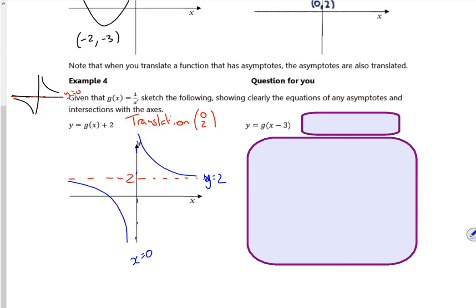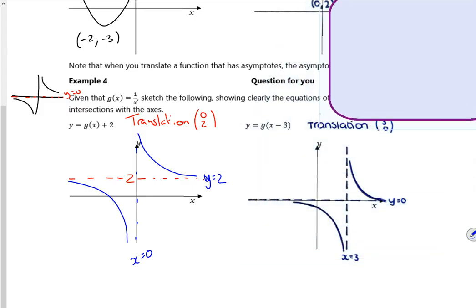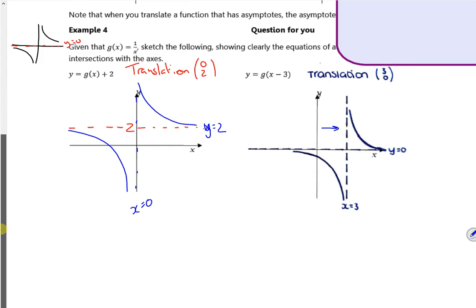So the minus 3, you think it's going left, but it's actually going right. So it goes 3 to the right. So the asymptote at x is 0 is now moved to x is 3. So you can see, so I've moved everything over by 3 units there.